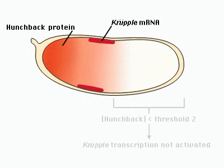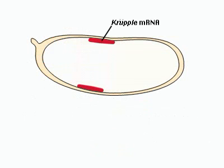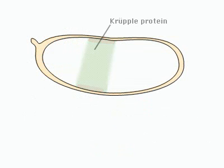At a second lower threshold concentration, Hunchback no longer activates Krüppel. Thus, Krüppel protein localization is restricted to a central band of the embryo.